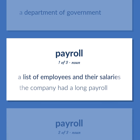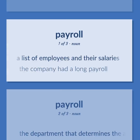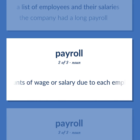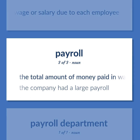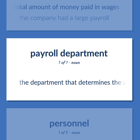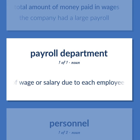Payroll: a list of employees and their salaries — the company had a long payroll. Also, the department that determines the amounts of wage or salary due to each employee. The total amount of money paid in wages — the company had a large payroll.